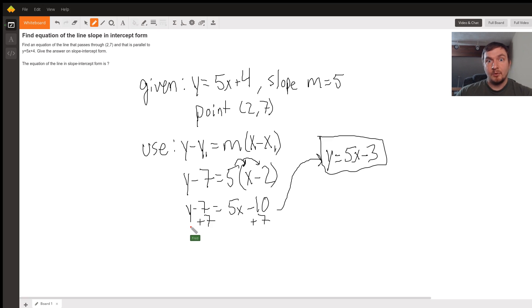Now, one last step before we get to the answer, we need to get this y by itself on the left-hand side. So we're going to want to add 7 to undo the minus 7. So we add 7 to both sides, and what we end up getting is y equals 5x minus 3.